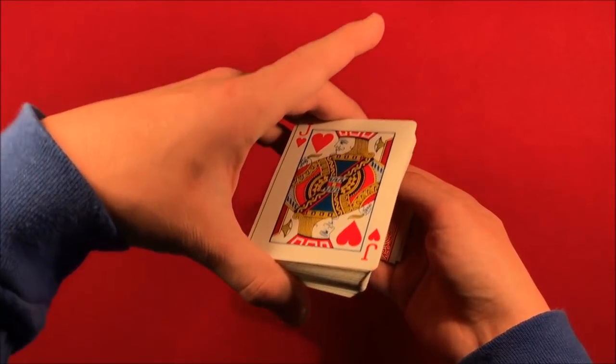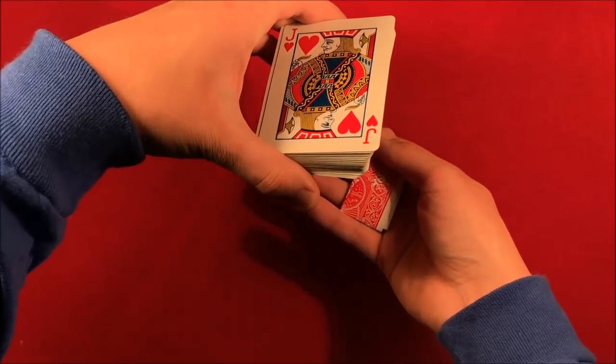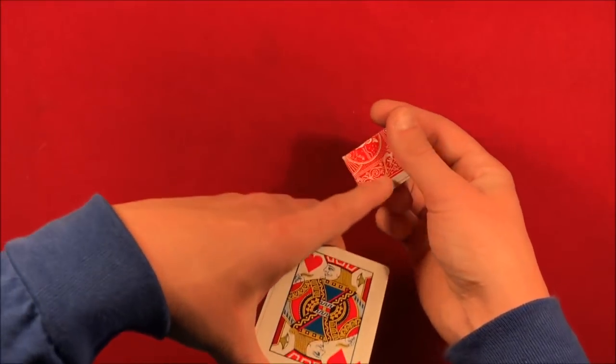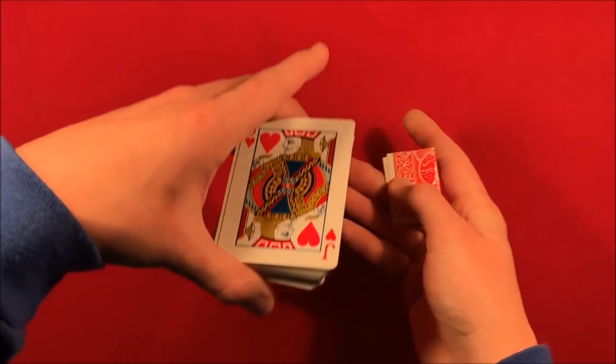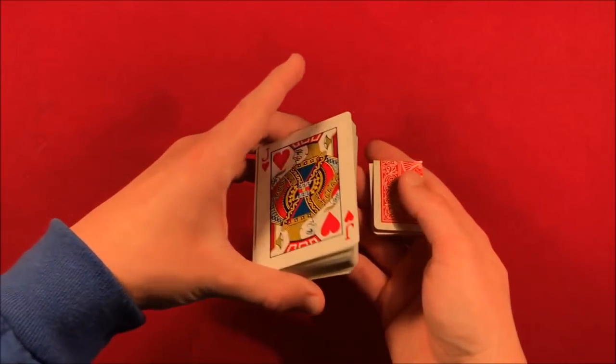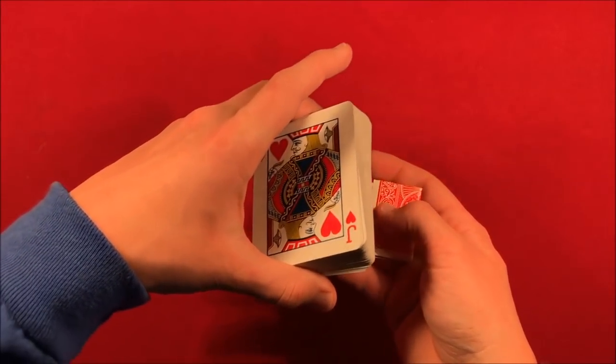He angles it towards her, he puts his right hand with the card underneath her hand. She's not going to see this because now her hand is covering this up. The deck goes on top and now he just slides the four card packet underneath her watch.